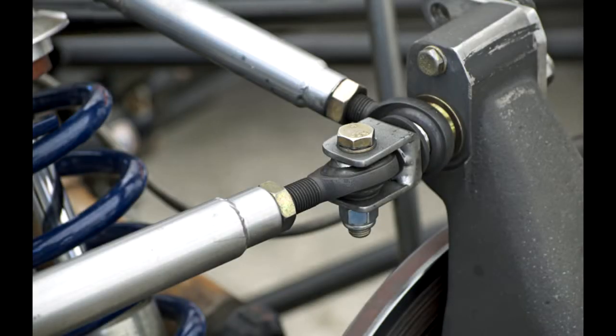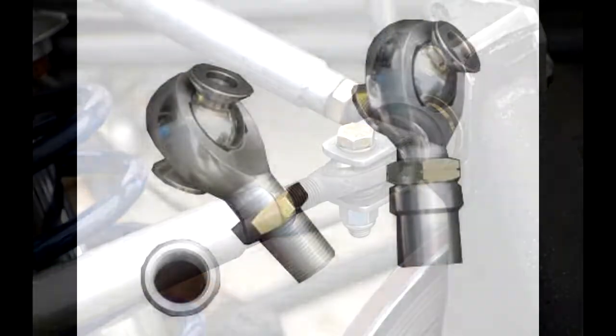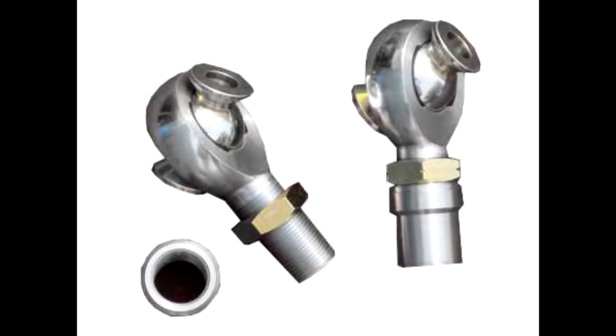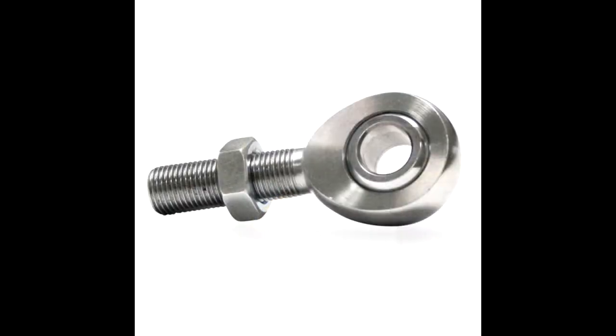More common on race cars and go karts is the rose joint or heim joint. They consist of a spherical insert inside a spherical housing. This allows them to have a wide degree of movement.